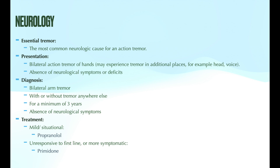Basic lab work should be done to rule out any electrolyte imbalances, specifically hypocalcemia. We know that low calcium levels can cause muscle spasms and we want to rule this out. Also thyroid function — we know that hyperthyroidism can cause tremor as a side effect, so we want to make sure that is not what's going on with the patient.